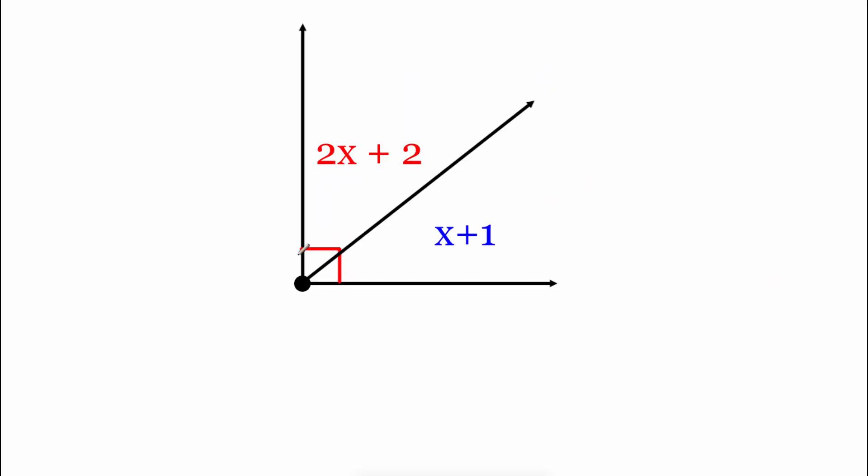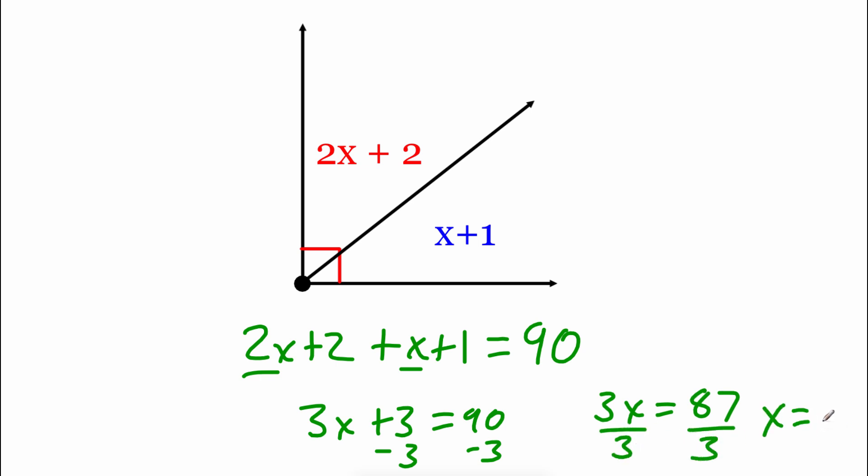In this example, we can see that our angle has that box down in the left-hand corner. Remember, that means that we're dealing with a right angle or a 90-degree angle. So if we start setting up our angle addition postulate on this one, I'm going to add up the two small angles. So we've got 2x plus 2, plus x plus 1 equals our big angle. Since it has that box, it's a 90-degree angle. Combining like terms, 2x and x is 3x, plus 2 and plus 1 gives us plus 3 equals 90. If we subtract 3 from both sides, we get 3x equals 87. And then dividing both sides by 3, we should get an x value of 29.